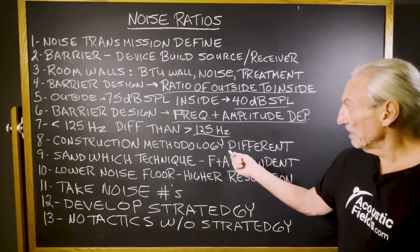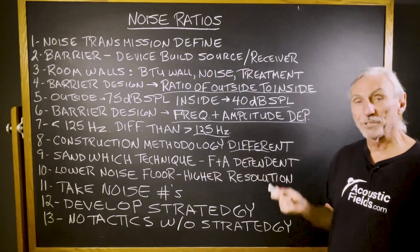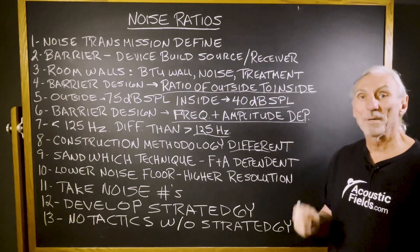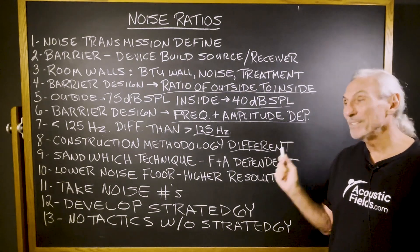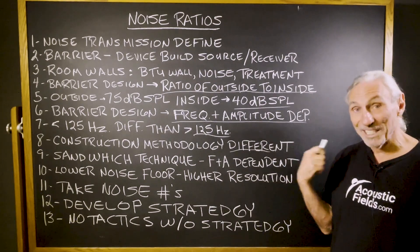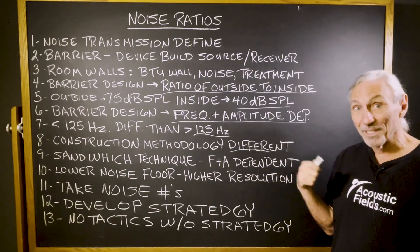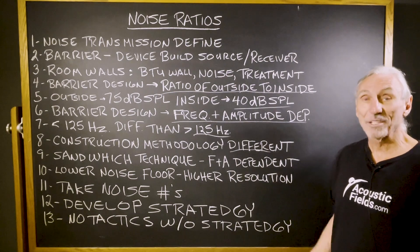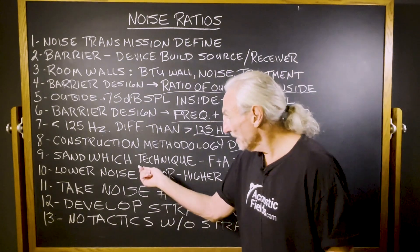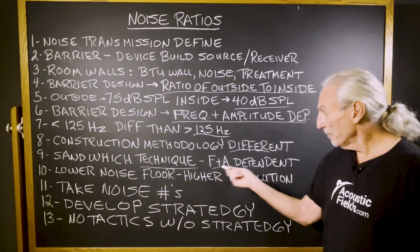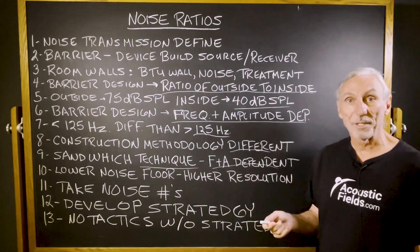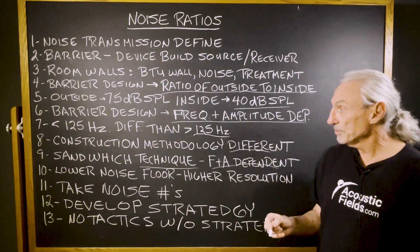Structured methodology is different — that's why we have to measure. With noise, you don't want to spend any more money than you have to. Not one dollar more, because that money could go to treatment, which you can see and hear. Noise costs are permanent construction expenses — you never get that back. We use a sandwich technique that is frequency and amplitude dependent, and we have over 30 or 40 variations depending on your noise situation.